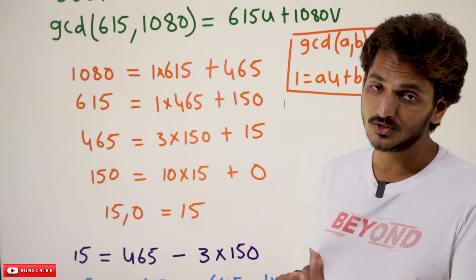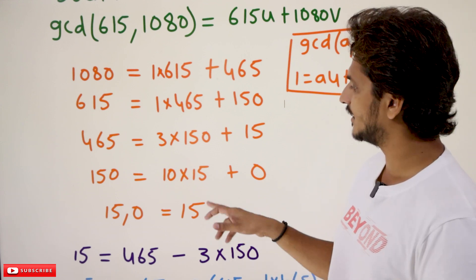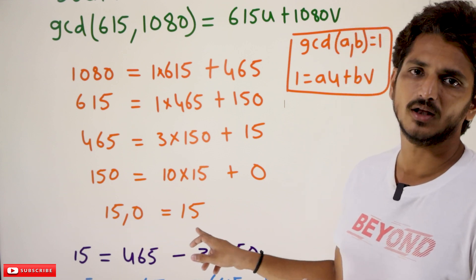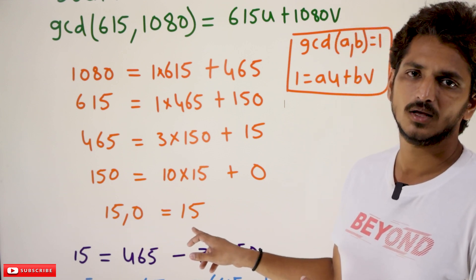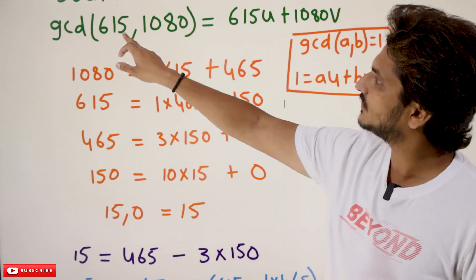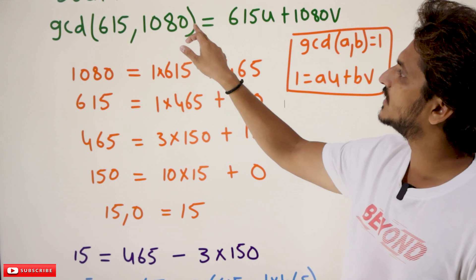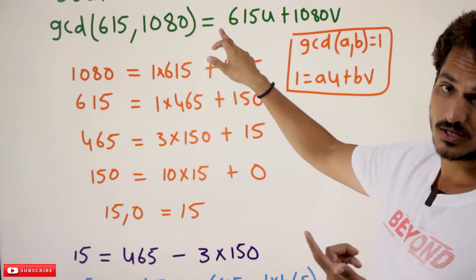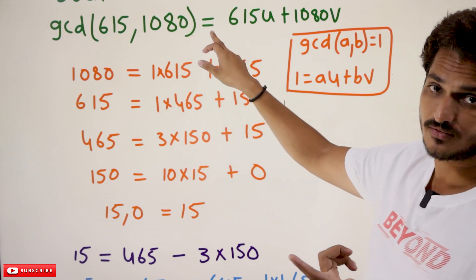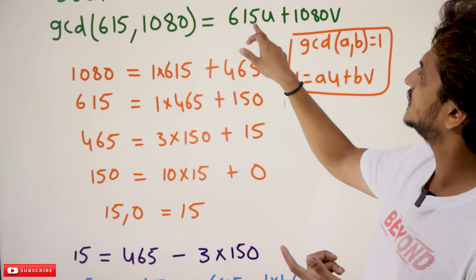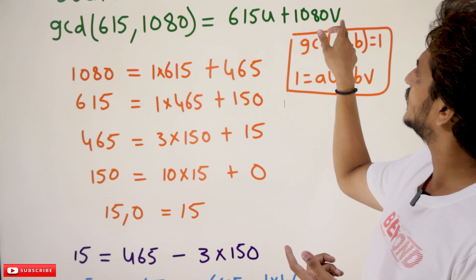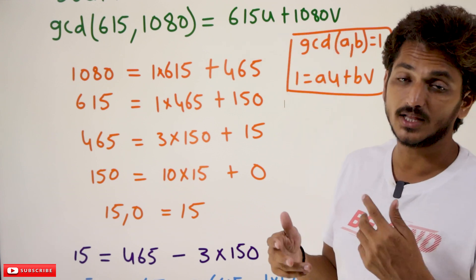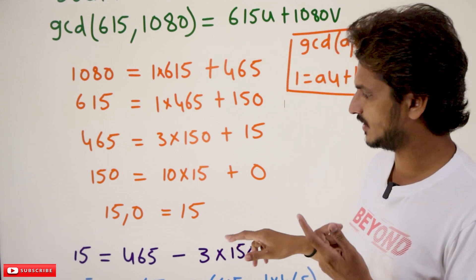GCD(15, 0) = 15, so GCD(615, 1080) = 15. It was given that GCD(615, 1080) = 615u + 1080v, so now we need to find u and v.